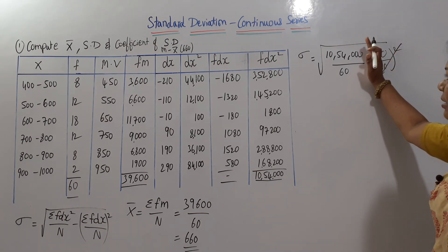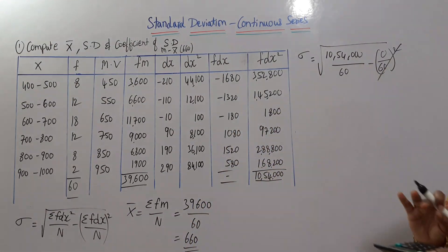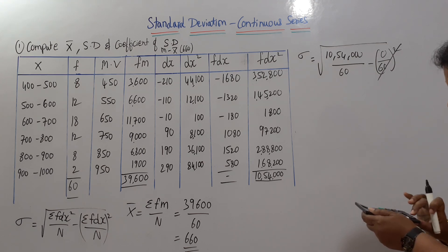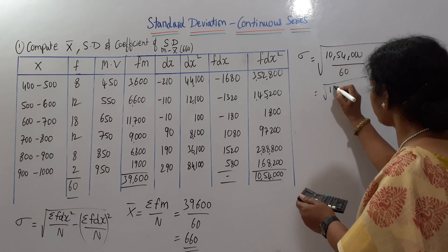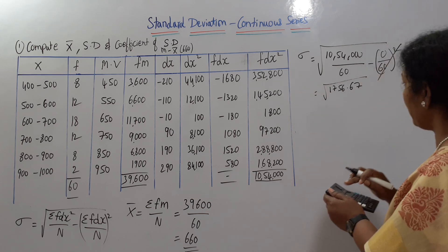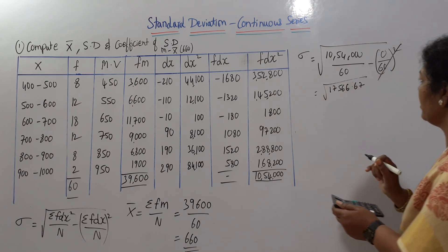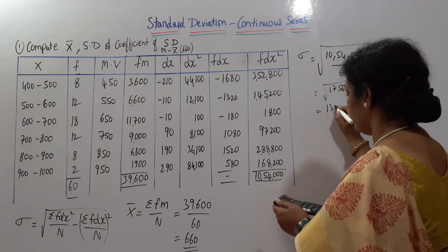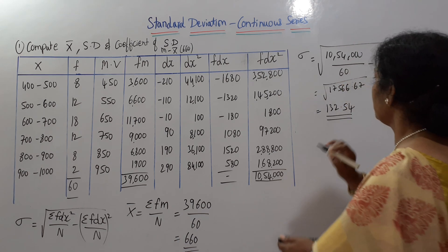We focus on the calculation: 10,54,000 divided by 60 equals 17,566.67. Taking the square root gives rho equal to 132.53. This is the standard deviation.